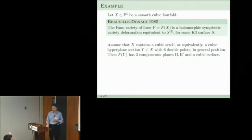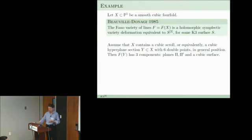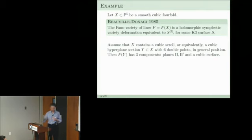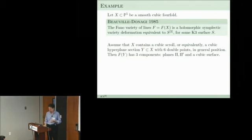Where does this come from? If we start with a cubic fourfold — mentioned in yesterday's talks and a beautiful topic in geometry and arithmetic — and look at its variety of lines, then it is actually a deformation of Hilb^2 of a K3. This is the result of Beauville and Donagi from 1985. There is an interplay between the geometry of a cubic fourfold and the geometry of certain surfaces — P2 or scrolls — and the associated holomorphic symplectic variety.